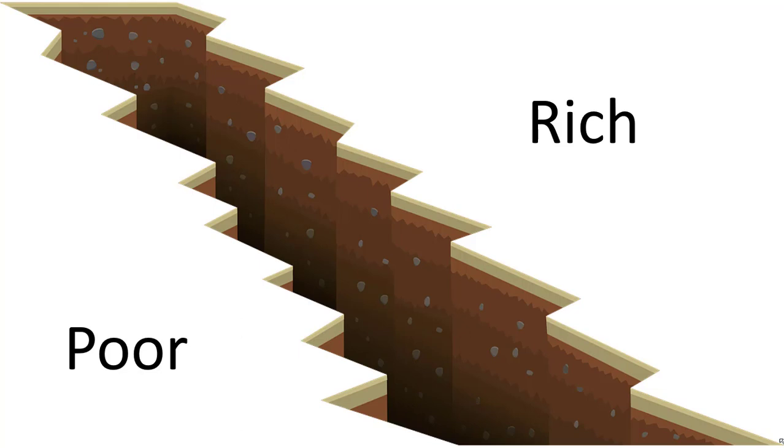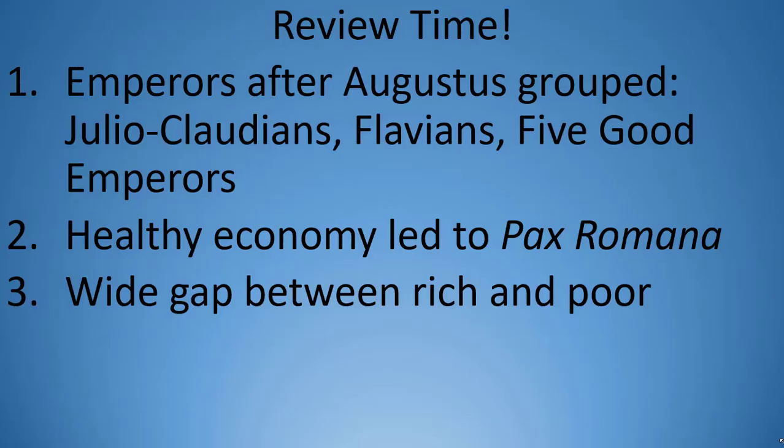Let's review the previous section. First, after Augustus, emperors tended to be grouped together — the Julio-Claudians, the Flavians, and the five good emperors. Second, a healthy economy and robust trade helped establish the period of the Pax Romana, or Roman Peace, of the first two centuries CE. Lastly, wealth was not evenly distributed throughout the empire, meaning a large gap existed between the rich and the poor.